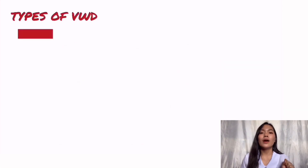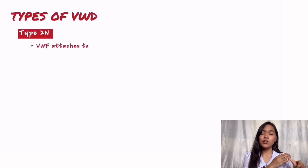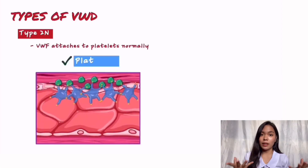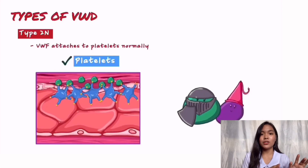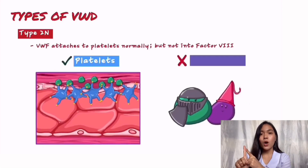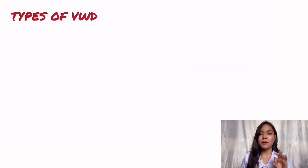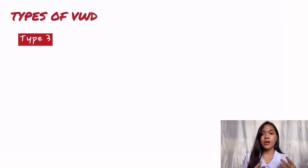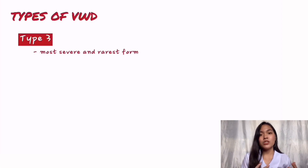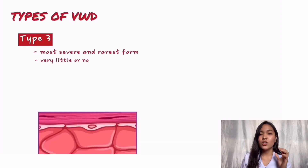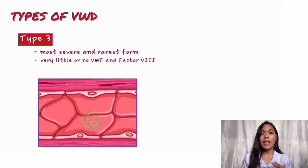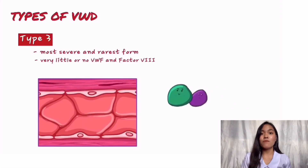In type 2N, the von Willebrand factor attaches to the platelets normally; however, the von Willebrand factor does not attach to factor VIII, which causes the body to remove the factor VIII protein. Lastly, we have type 3, the most severe and rarest form of von Willebrand disease, in which a person has very little or no von Willebrand factor and low levels of factor VIII.